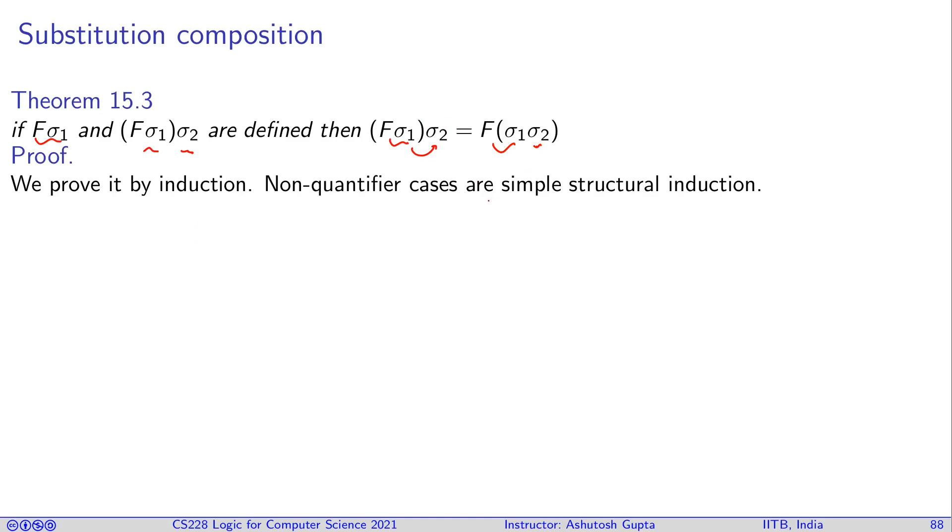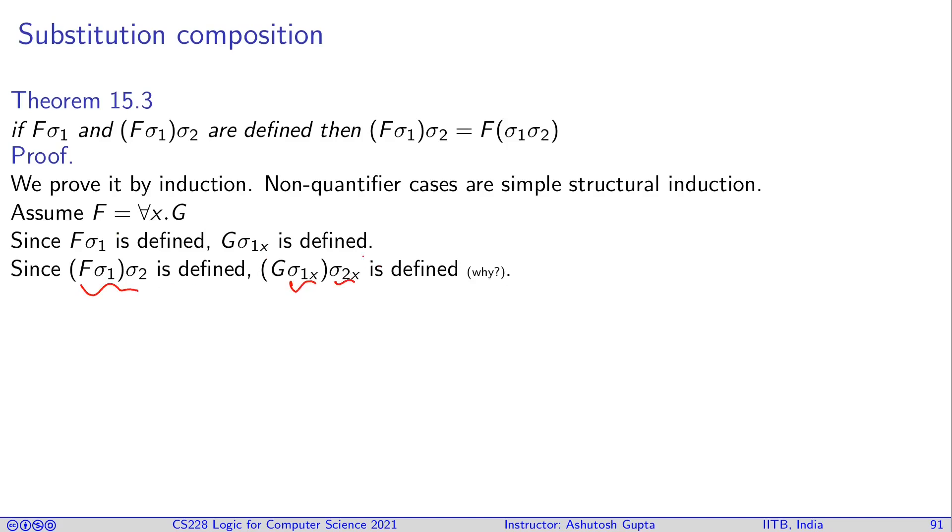Non-quantified cases are simple and simply proved by structural induction. So let's look at quantified case, for all x G. We will assume that this substitution works for this guy and also the substitution works for this guy. So I have assumption that these two are defined. If that is the case, then I can say that G sigma one backslash x is defined because what sigma one does, it just removes the mapping for one variable. So it's more likely G sigma one backslash x is going to be defined. Similarly, if this guy is defined, since I'm dropping the mappings, this is going to be defined.